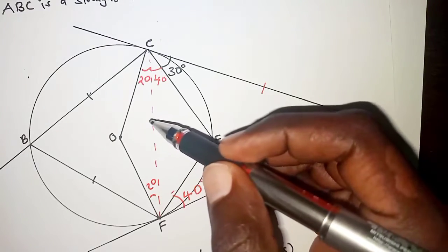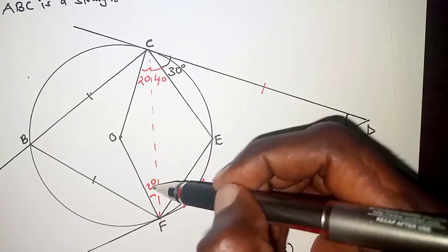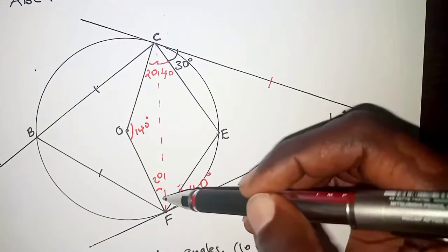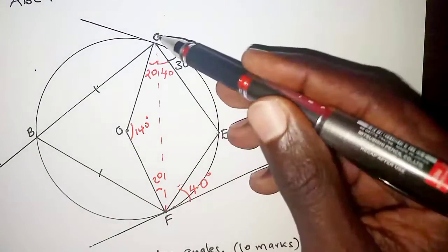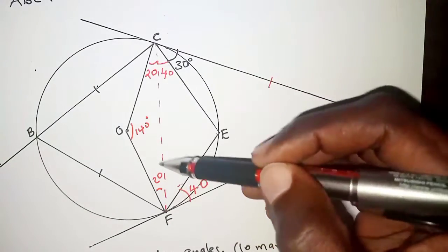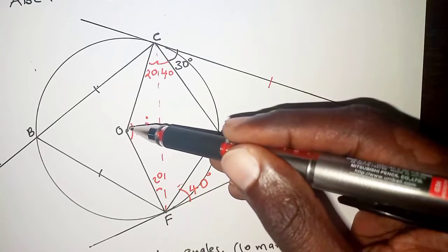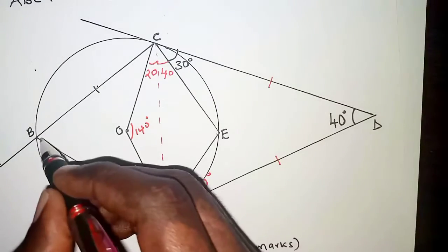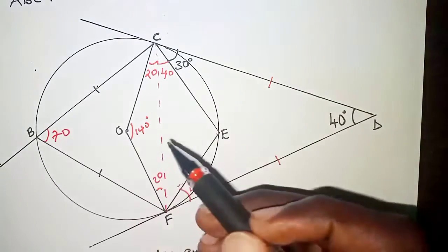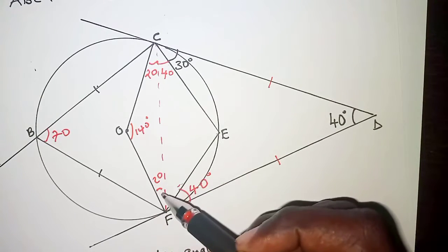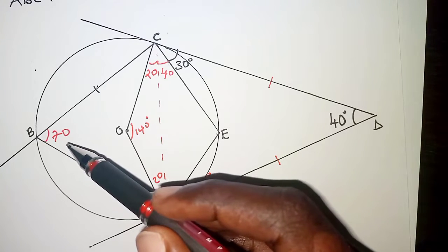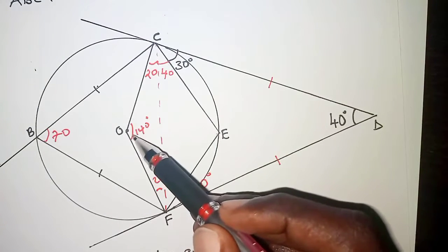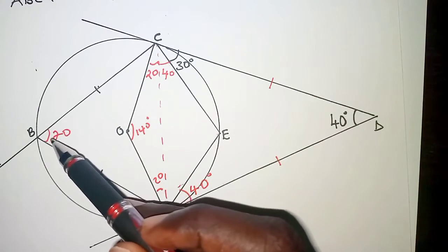Angles of a triangle add up to 180 degrees. If both base angles are 20 degrees, we are left with 140 degrees at the apex, which is angle FOC. Chord FC subtends an angle of 140 degrees at the center, and therefore subtends an angle of 70 degrees at the circumference, because the angle subtended at the center is twice the angle subtended at the circumference by the same chord.